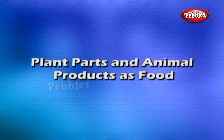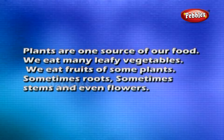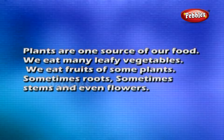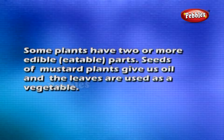Plant Parts and Animal Products as Food: Plants are one source of our food. We eat many leafy vegetables, fruits of some plants, sometimes roots, sometimes stems, and even flowers. Some plants have two or more edible parts. Seeds of mustard plants give us oil, and the leaves are used as vegetable.